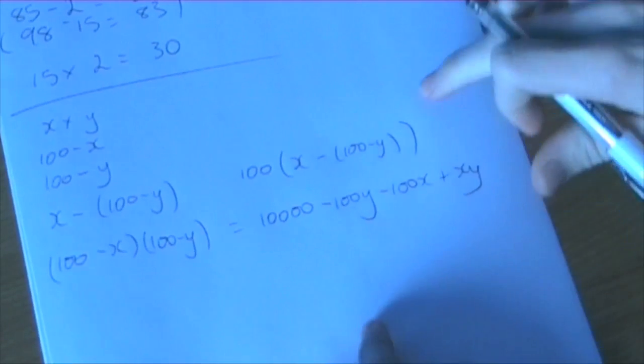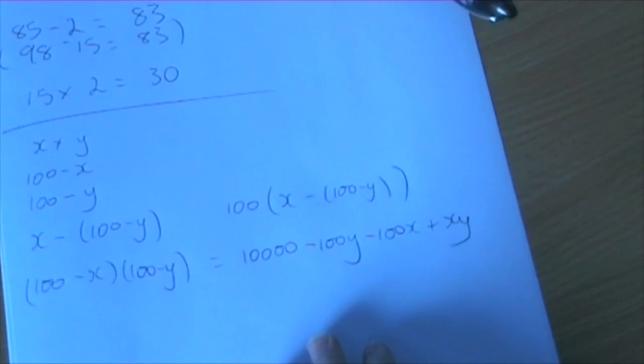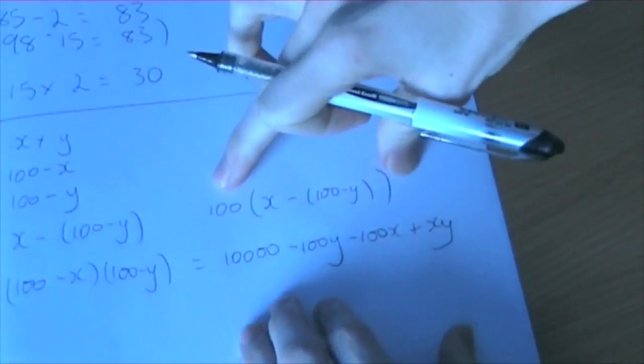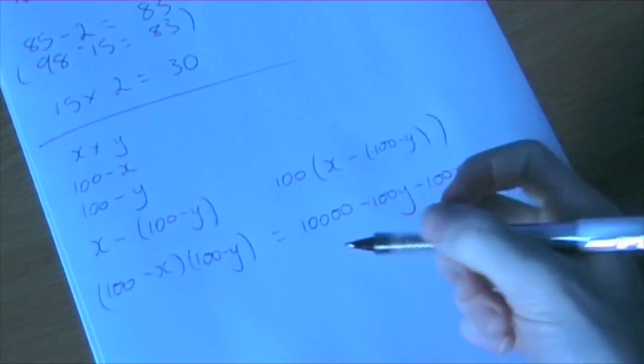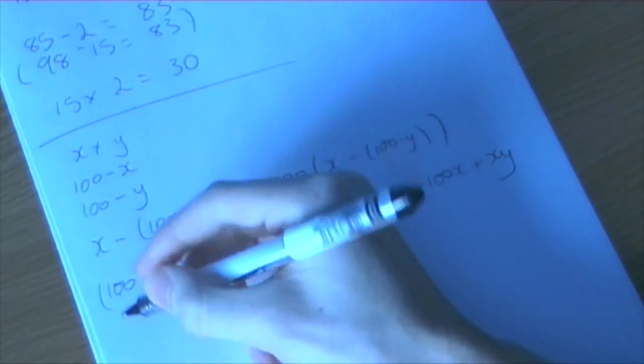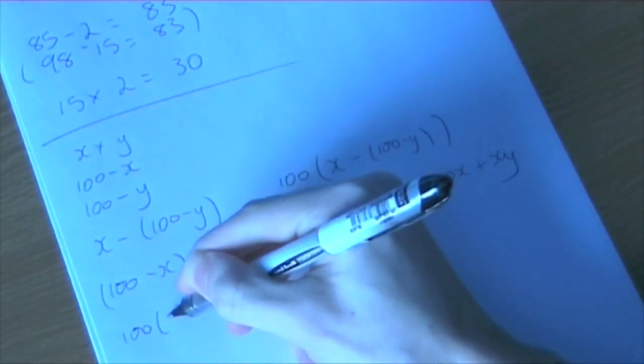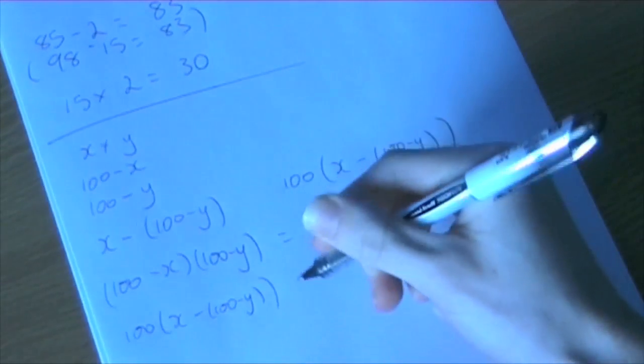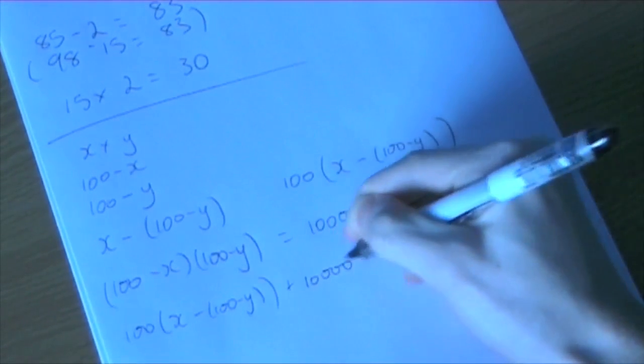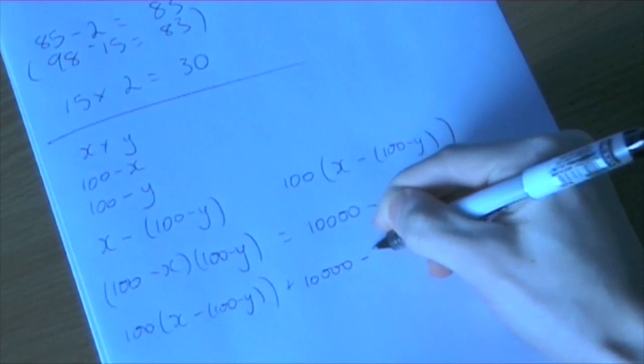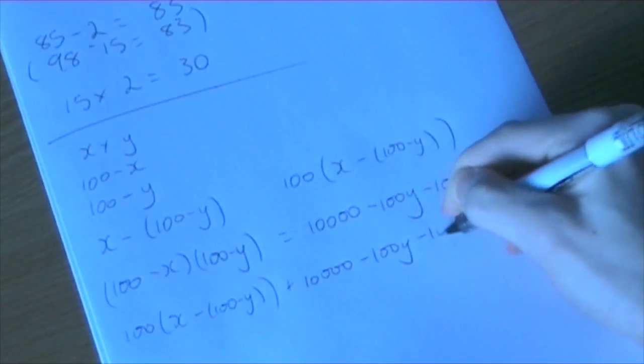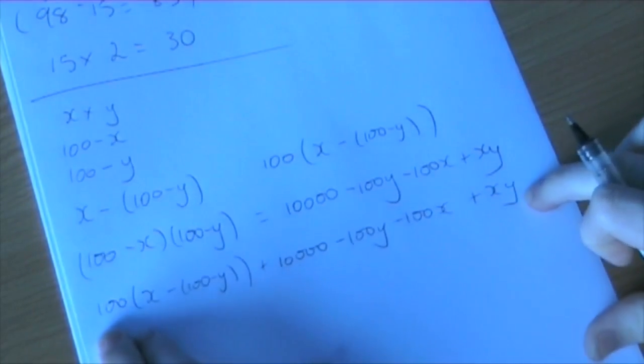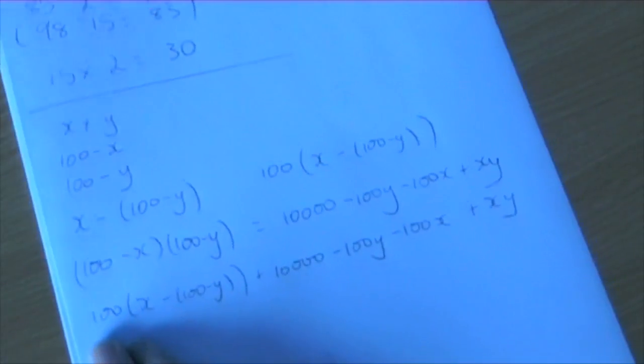So what we did was basically the 8,300 plus the 30, which is this plus this. So if we write it all out, we get 100 times (x minus (100 minus y)) plus 10,000 minus 100y minus 100x plus xy. So this is essentially the answer to x multiplied by y.